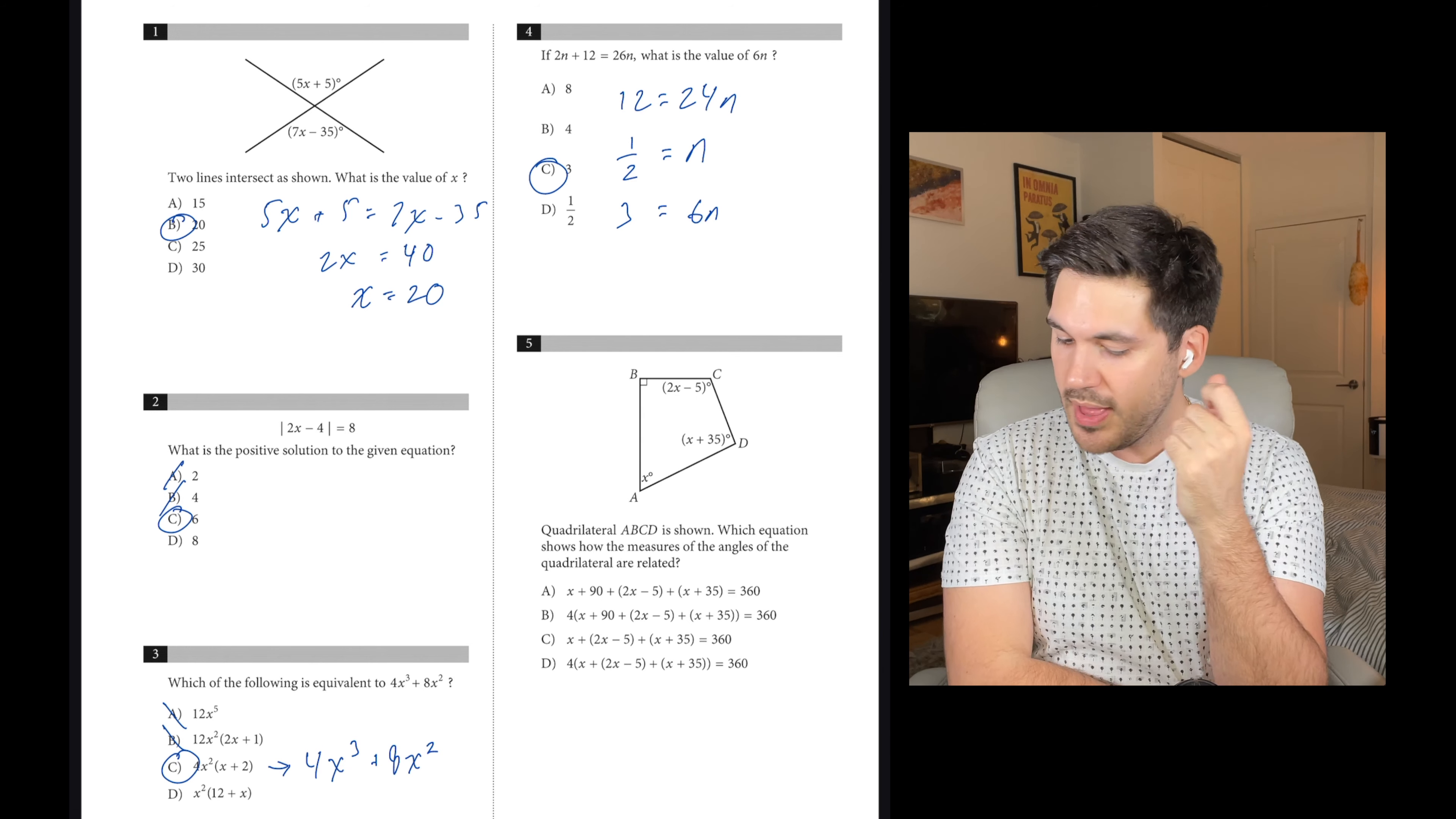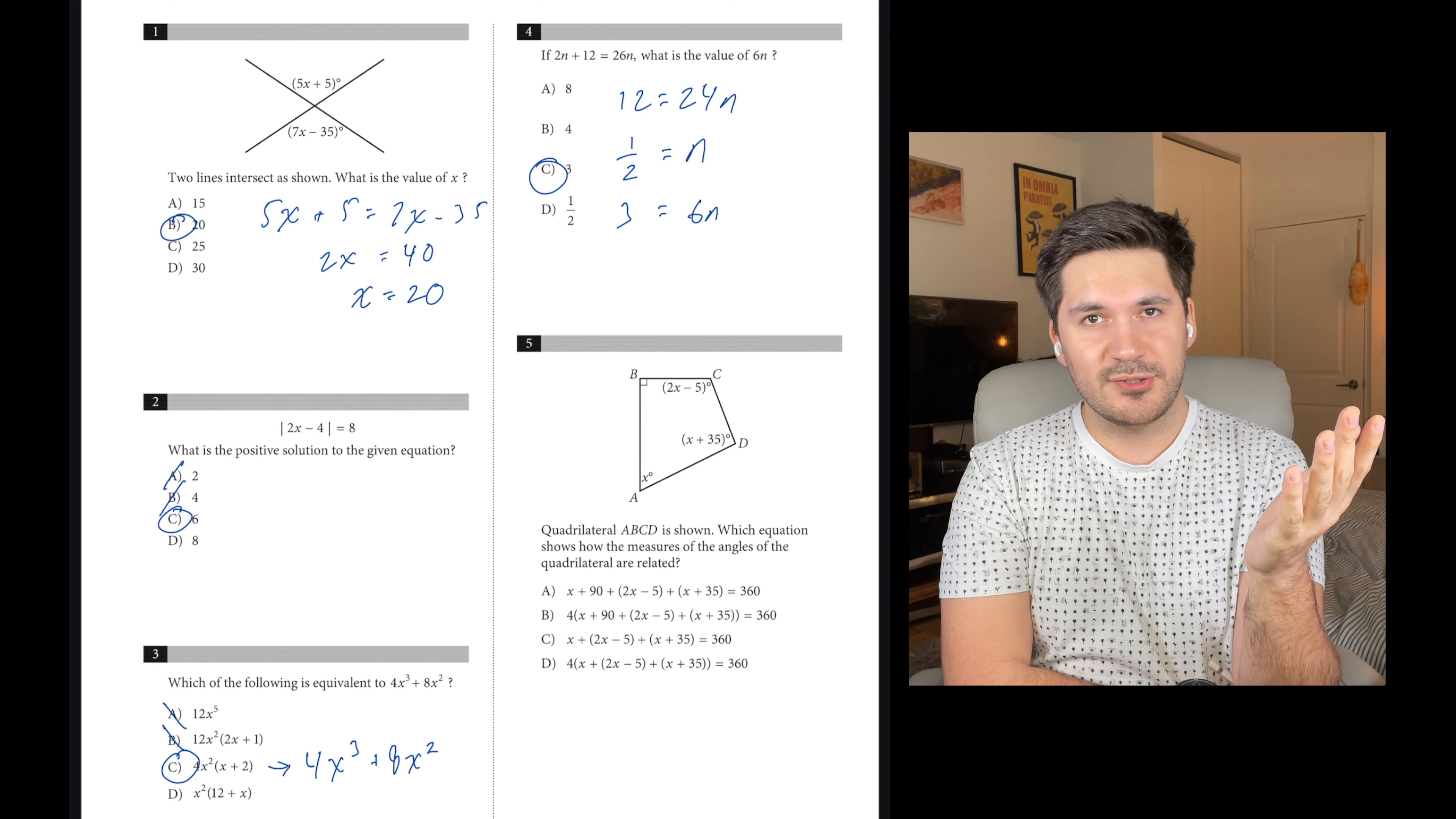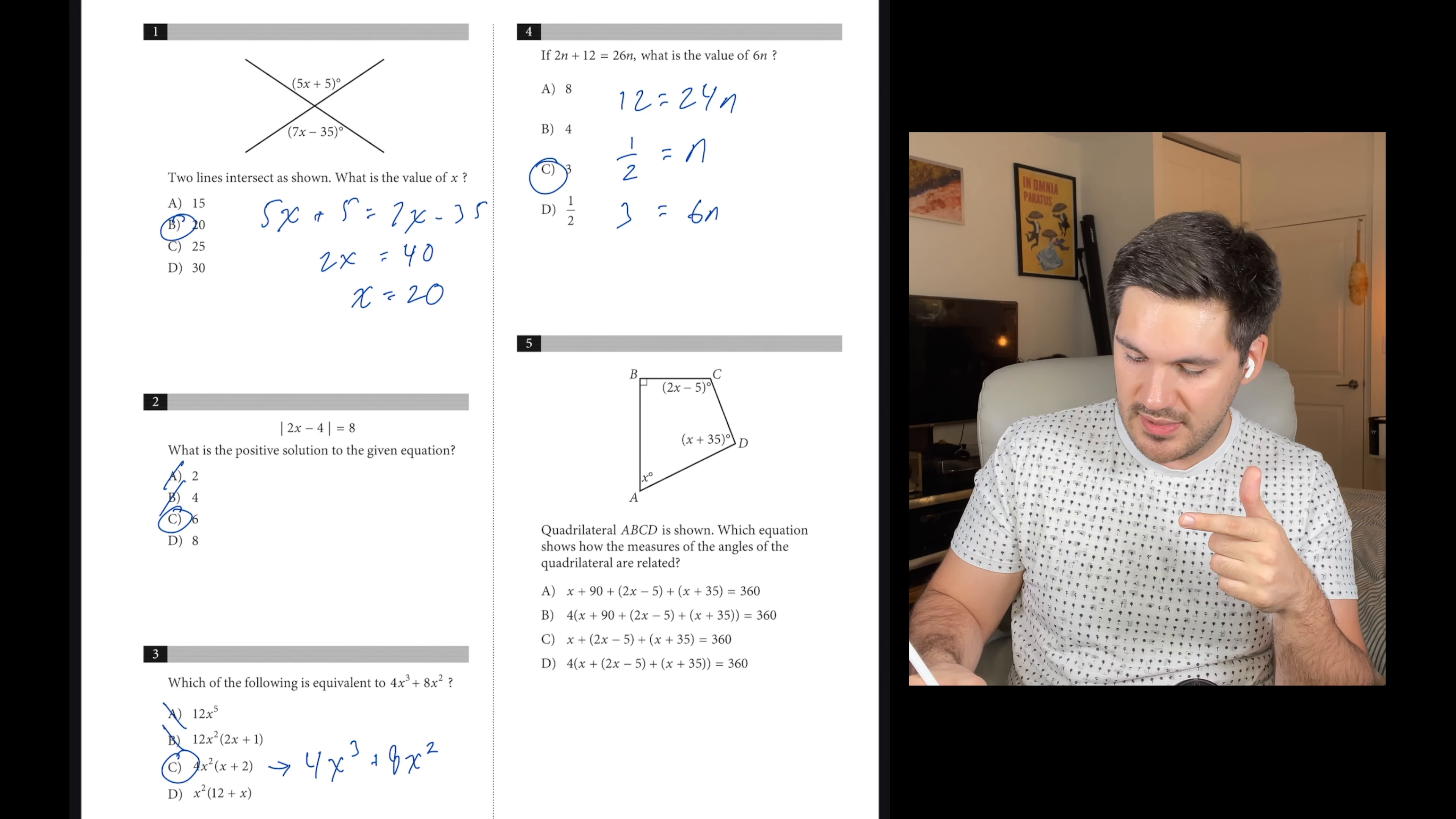Number five, quadrilateral ABCD is shown, which equation shows how the measures of the angles are related. If it's a quadrilateral, we know that all four angles have to add up to 360, and this is true with any quadrilateral. So we pick the answer choice that adds up all the angles and sets it equal to 360. That's A, because we have x, the 90 degree angle, 2x minus 5, and x plus 35.